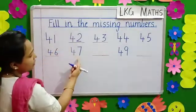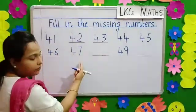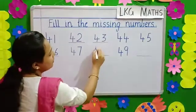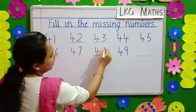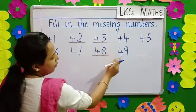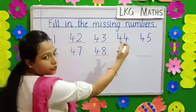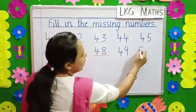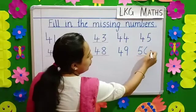The next number is already written, 47. After 47? 48, 49. After 49? 50.